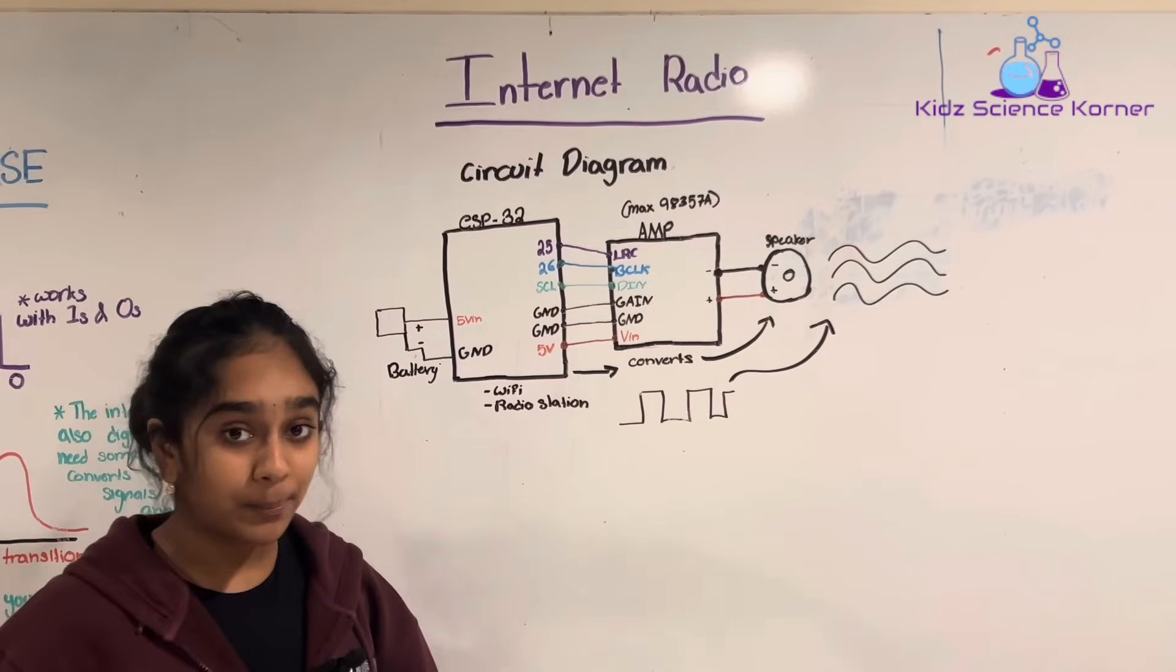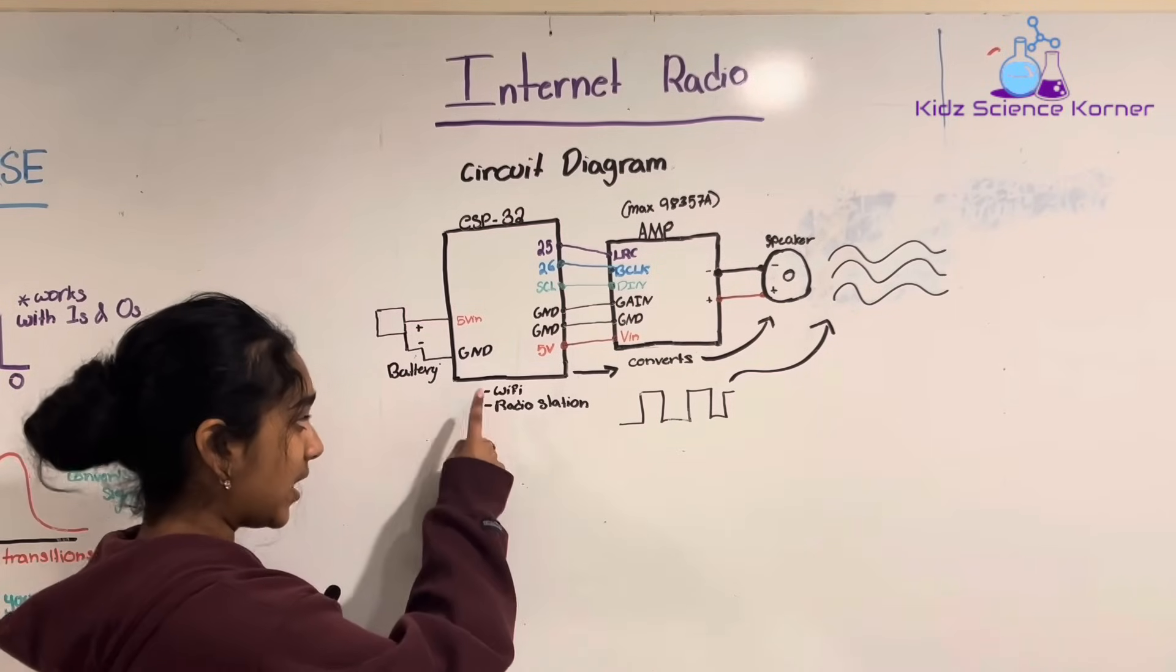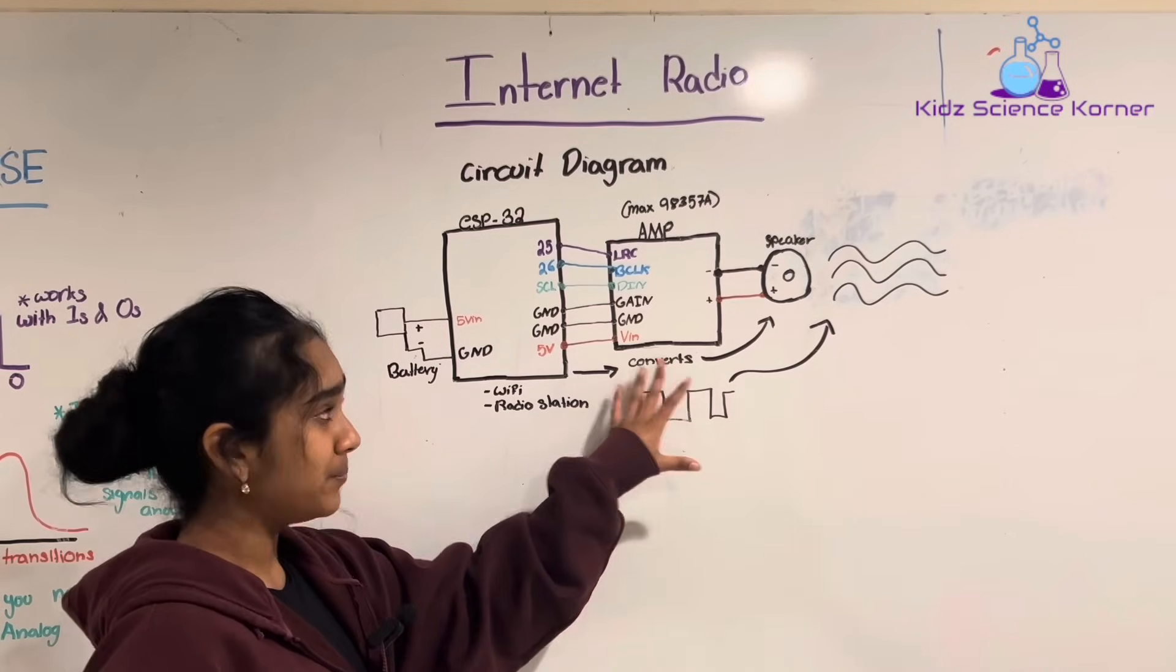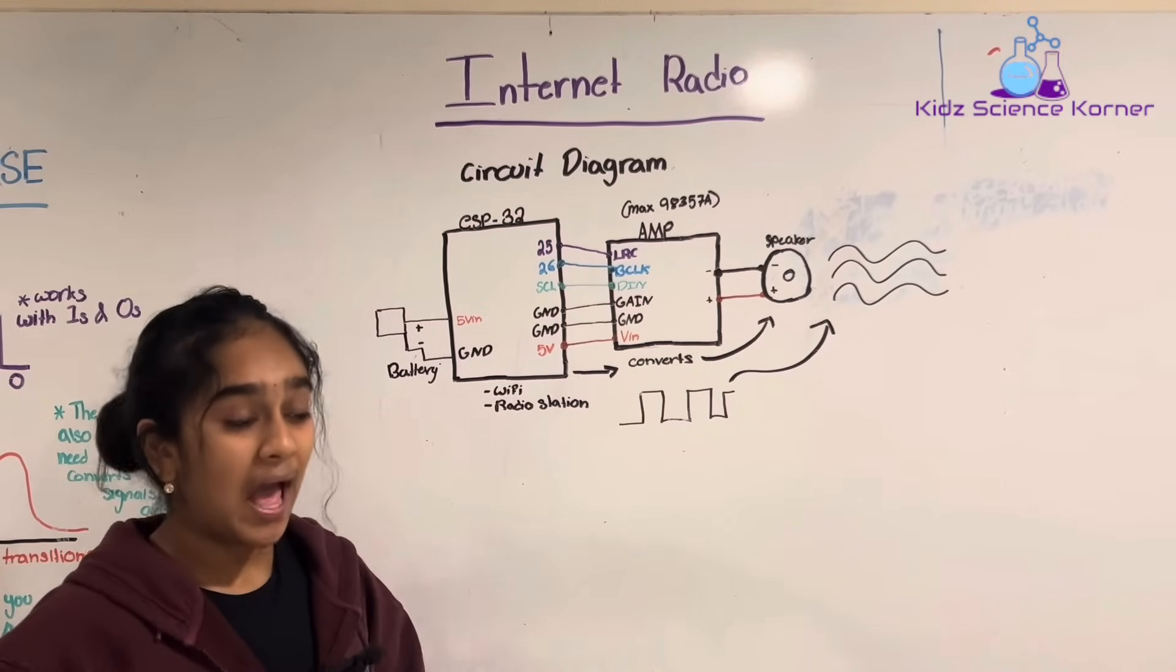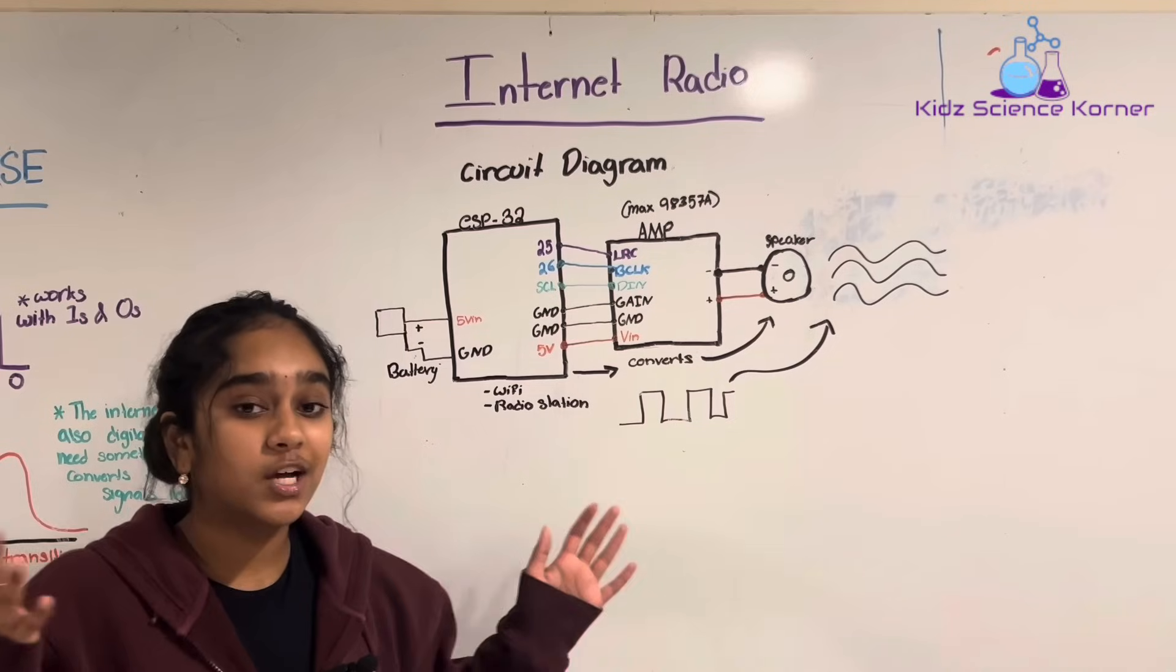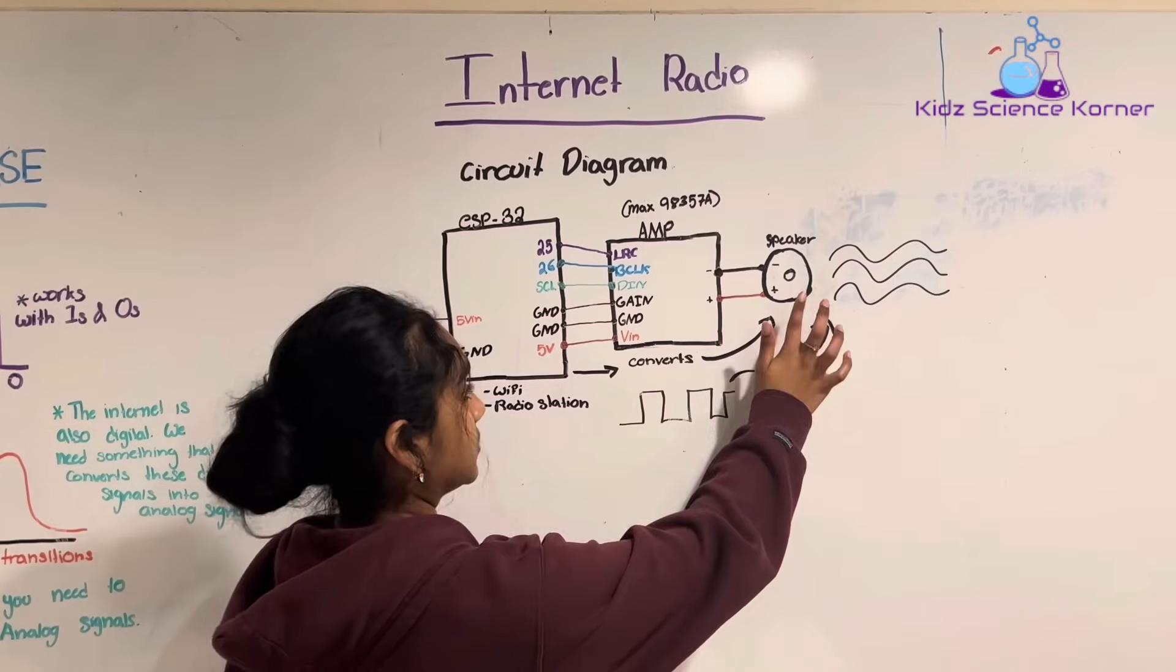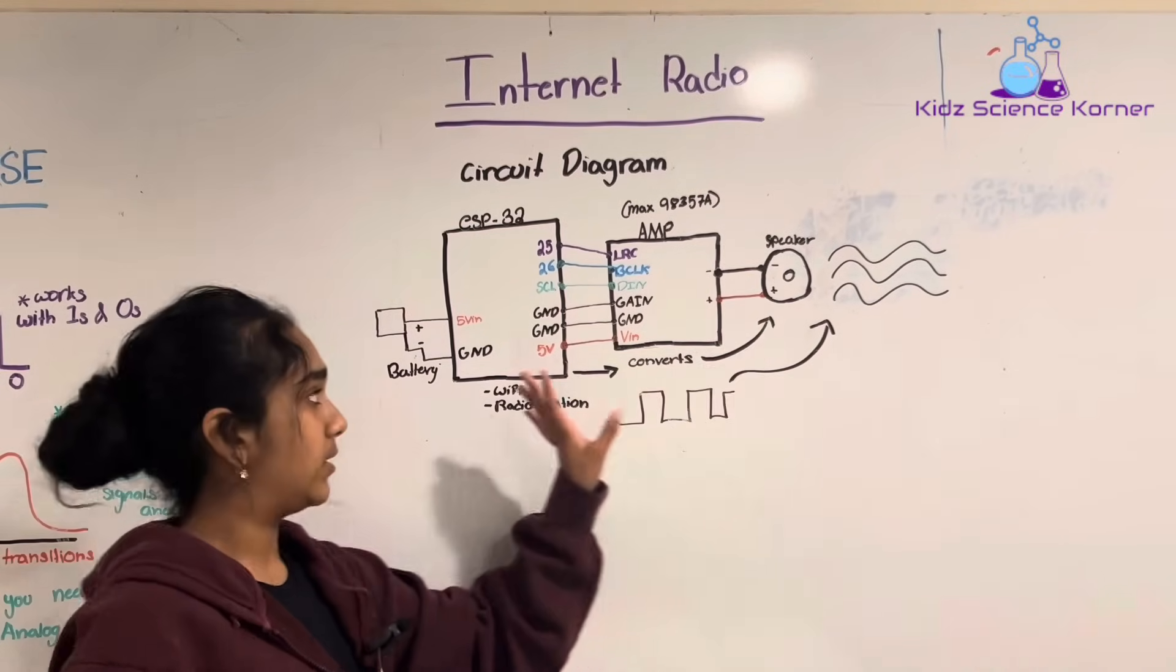The ESP32 is a popular microcontroller, and it's kind of like a mini computer. And what it does is it connects to the Wi-Fi and the radio station. And through digital signals, it sends all of that information to the amplifier. And the amplifier, the name of it is the MAX 98357A. And what it does is it takes the information that the ESP32 has sent to it in digital signals, and it converts all of that into analog signals while also amplifying the sound so that we can hear it when it sends this information through analog signals to the speaker. And it does all of that through these connecting wires.